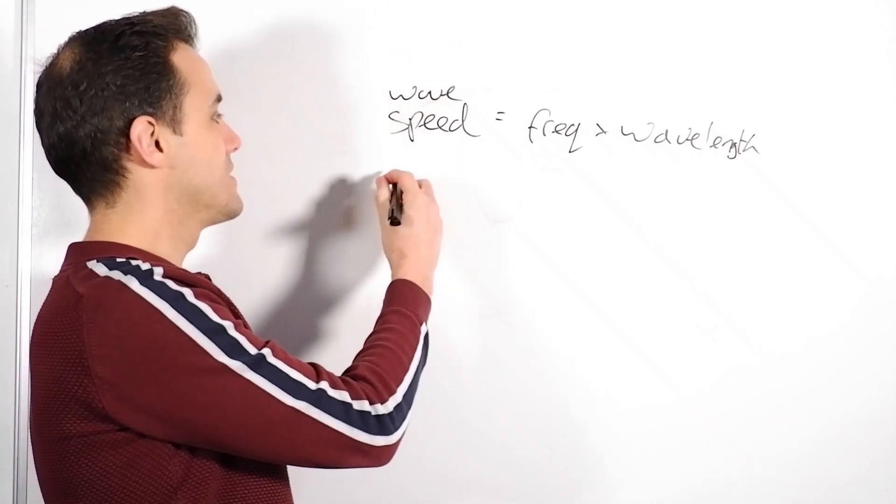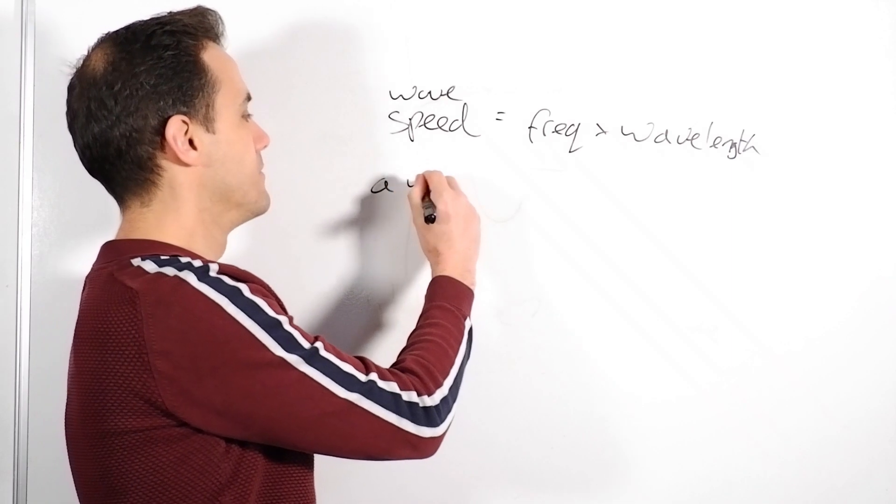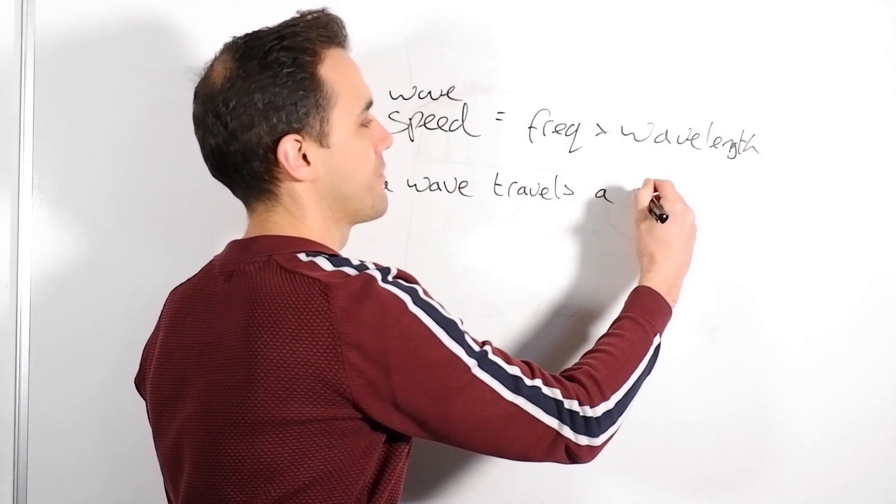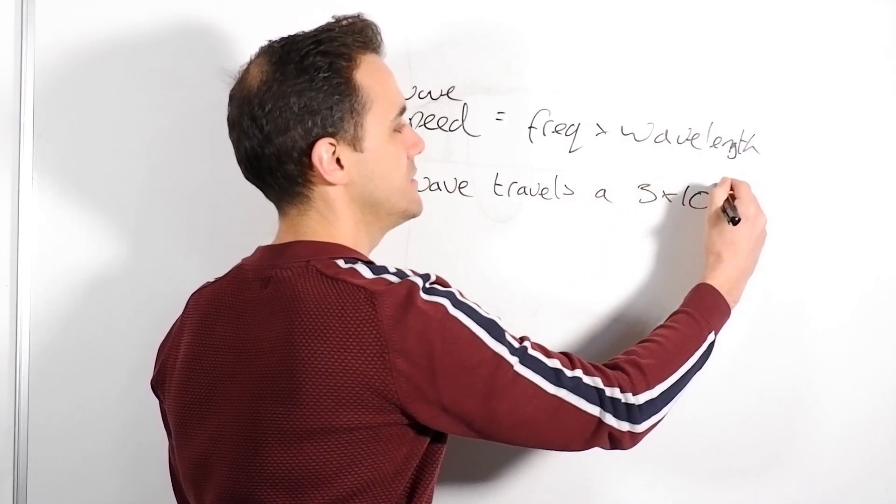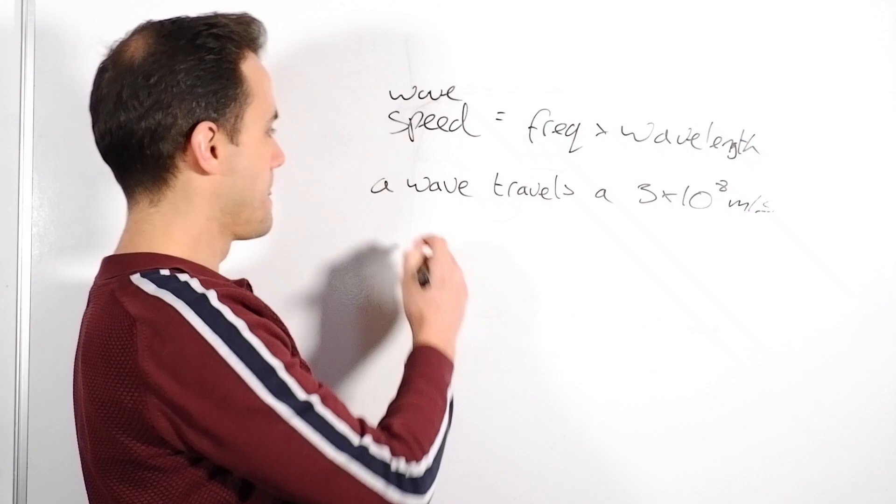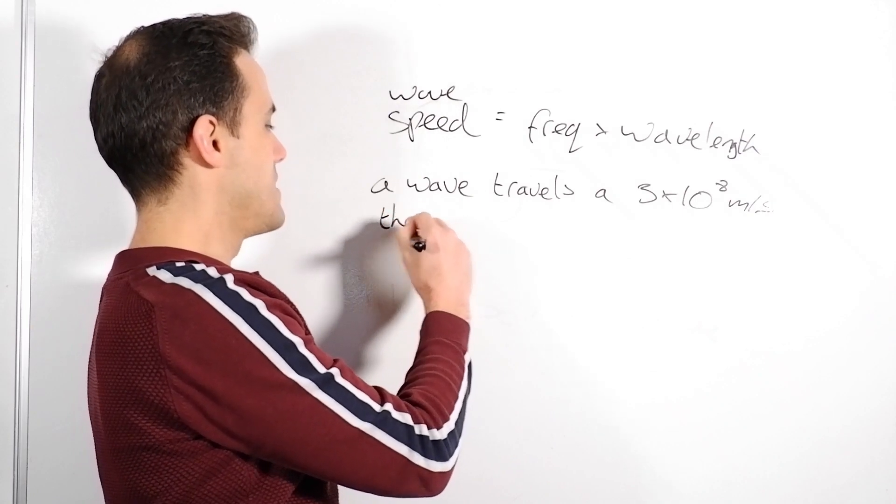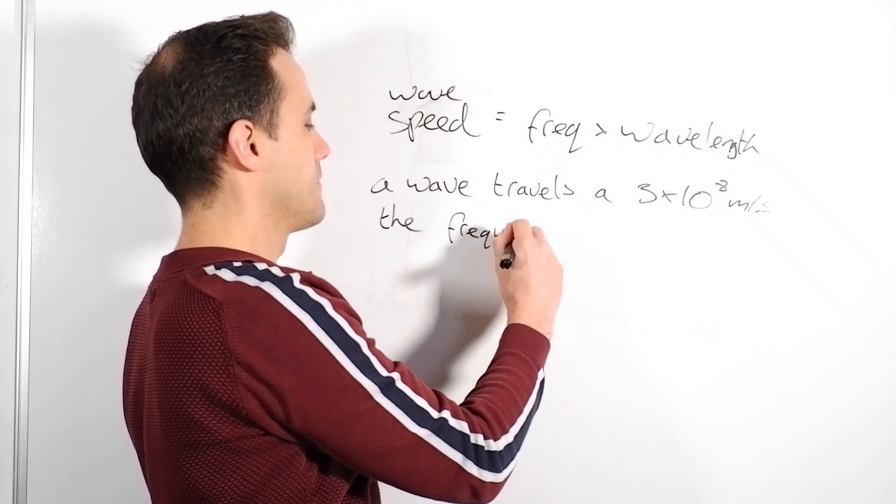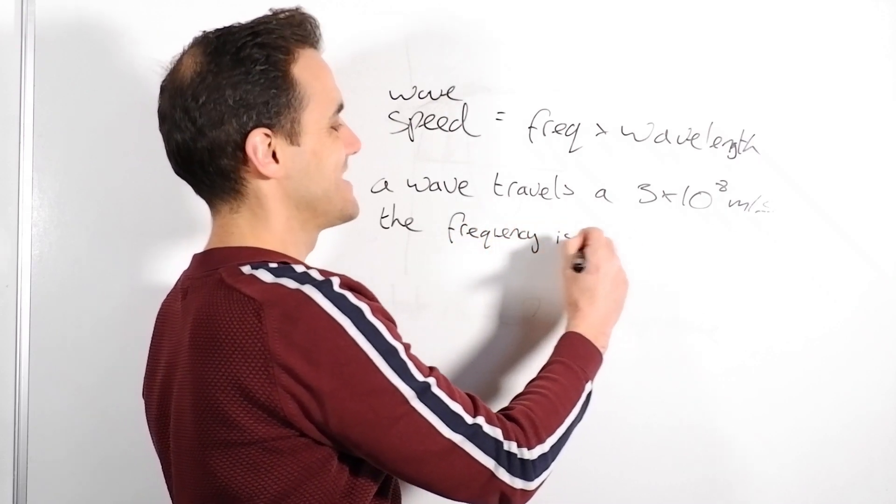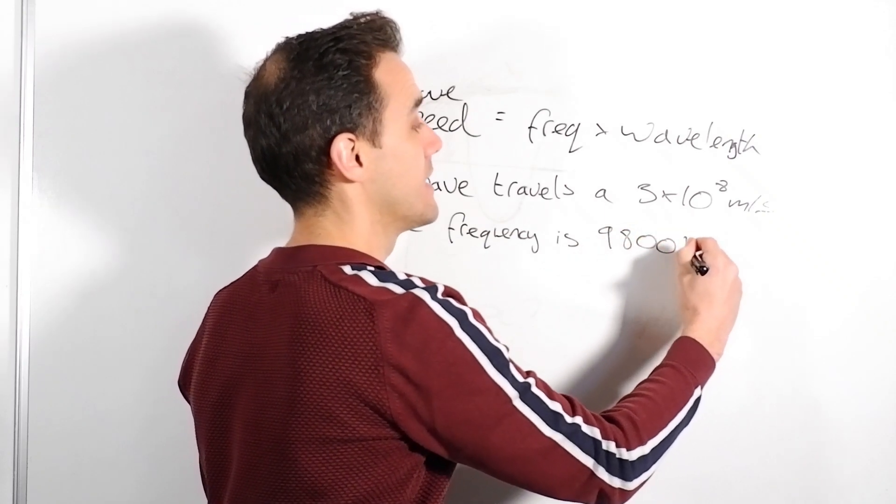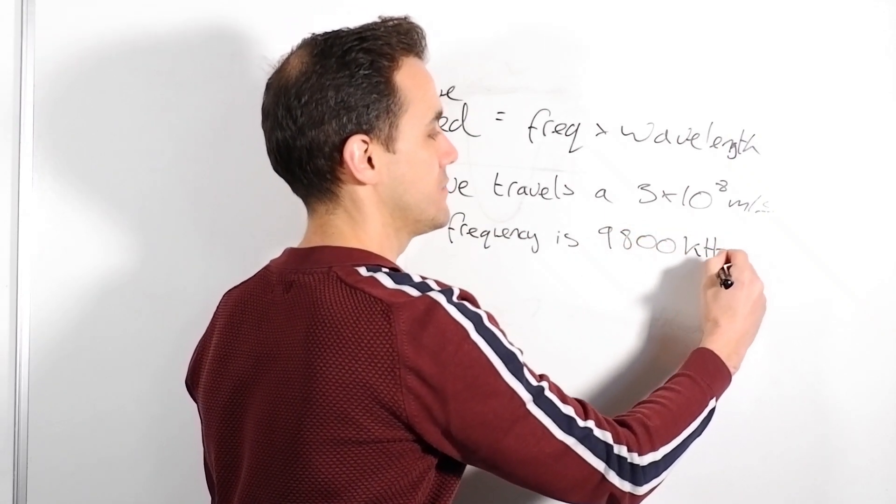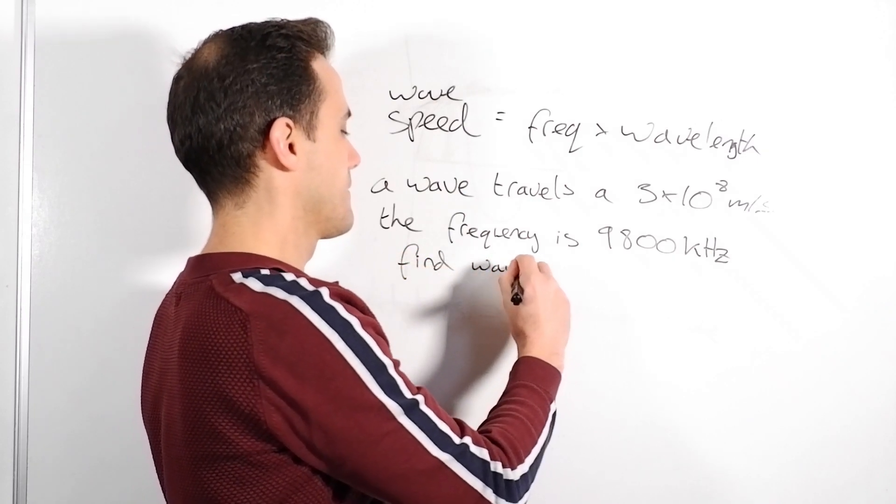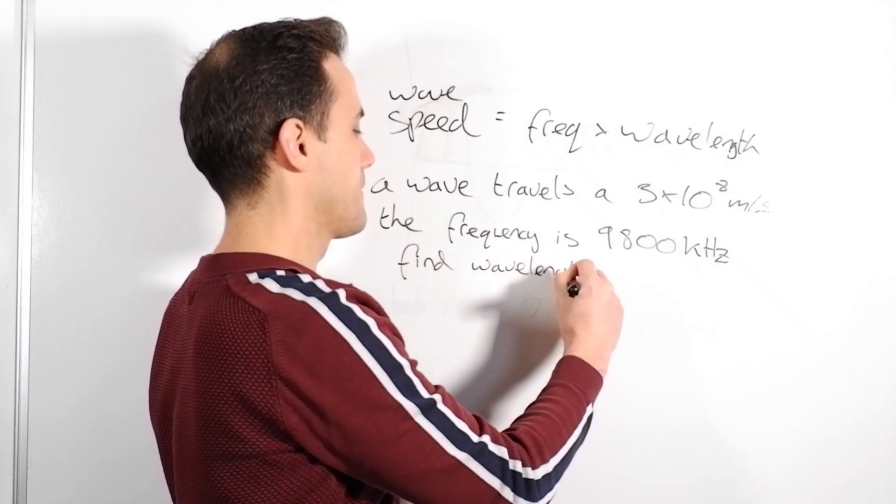So, what they could do is they could say a wave travels at 3 times 10 to the 8 meters a second. The frequency is 9,800 kilohertz, find the wavelength.